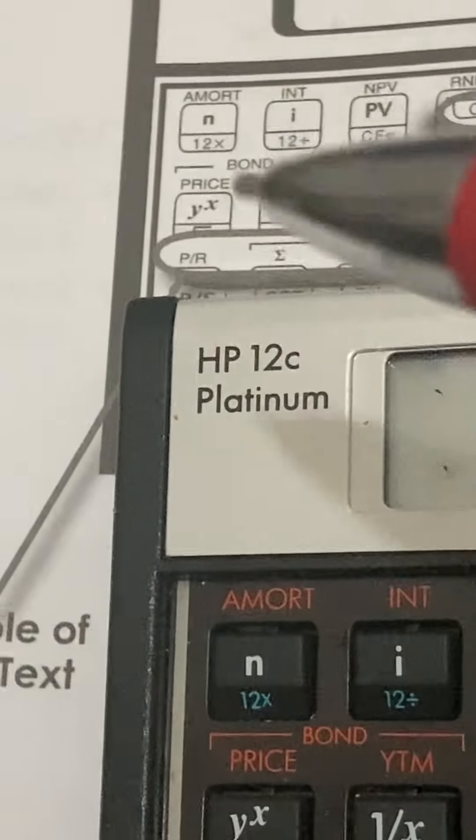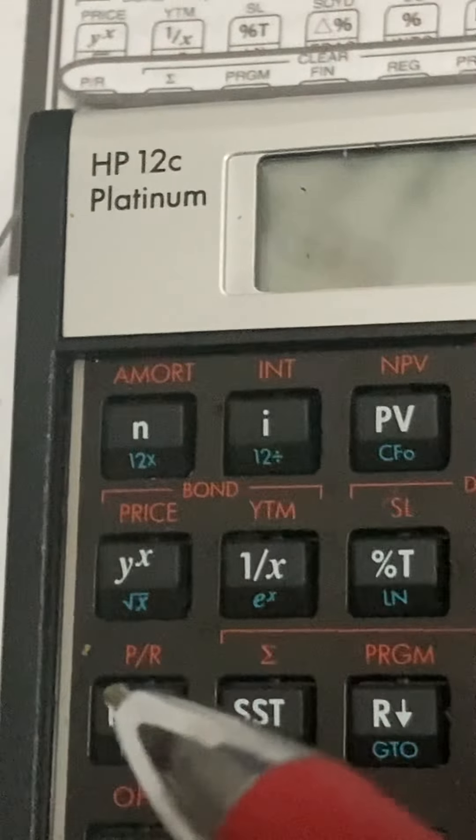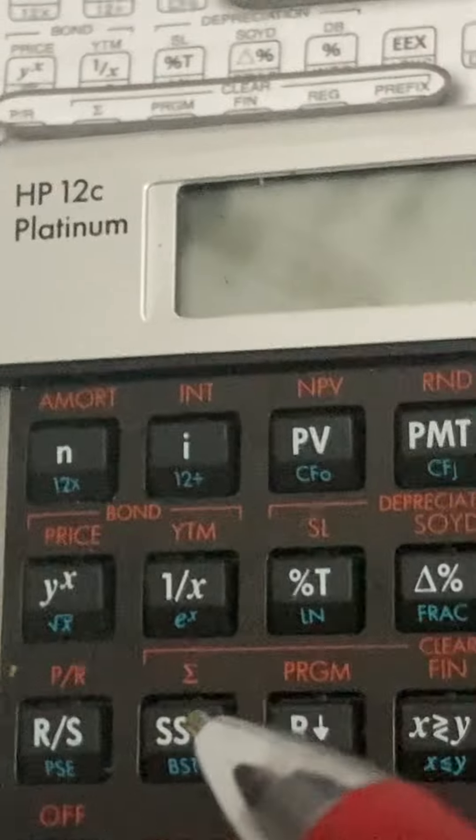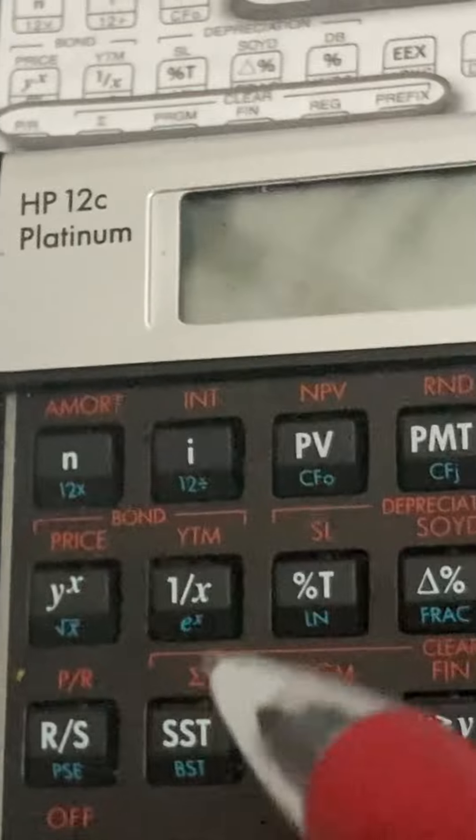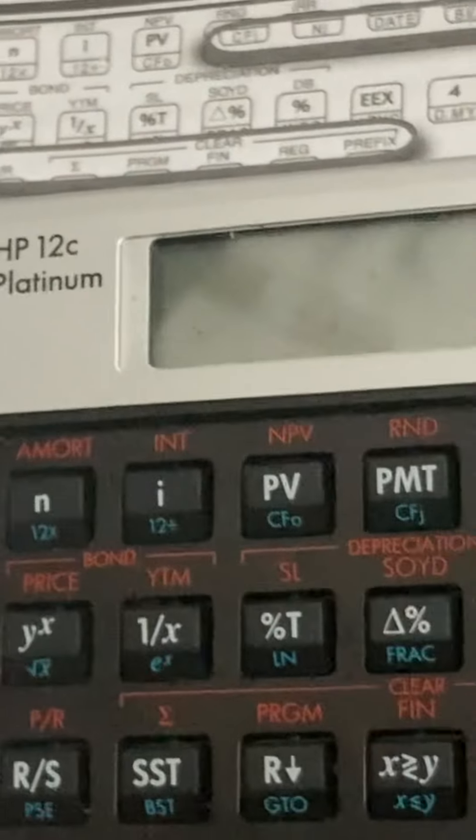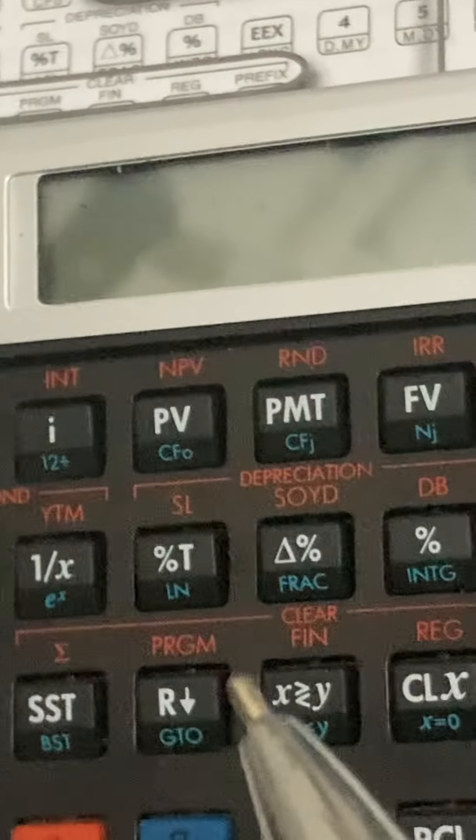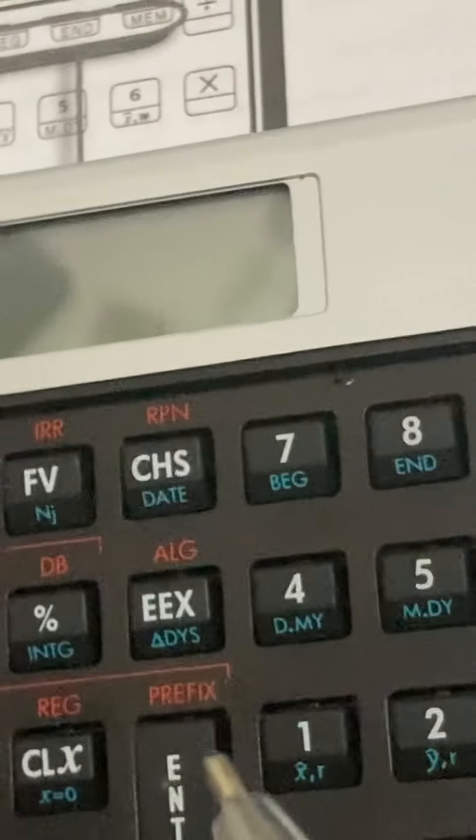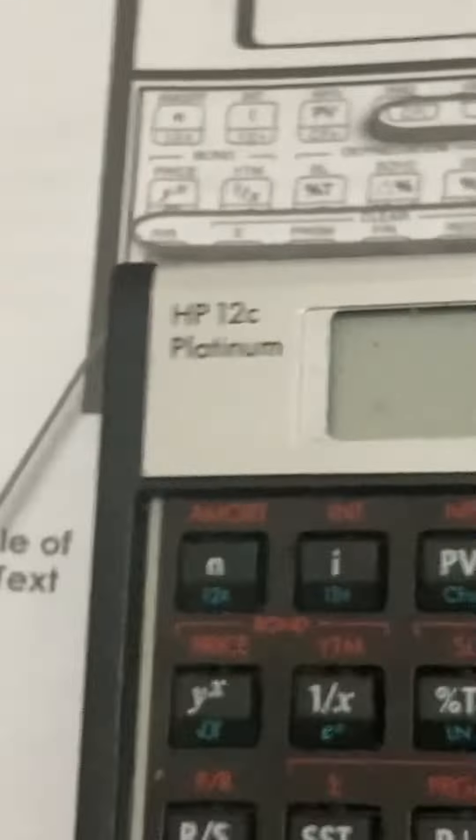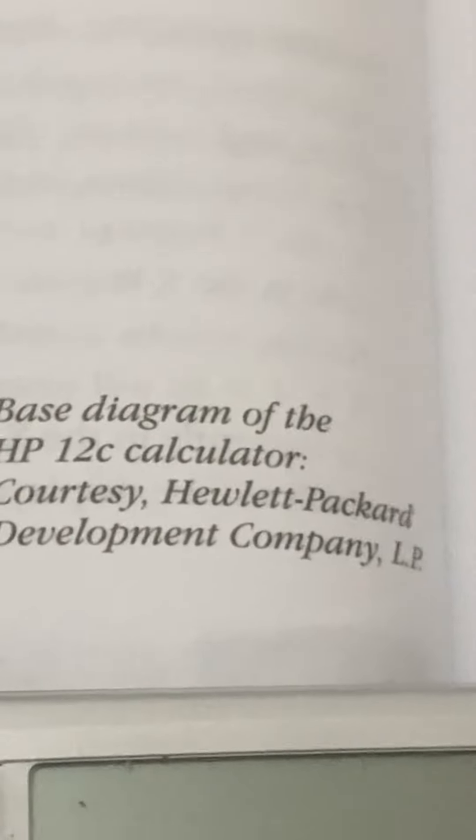Here's an image of it on your actual calculator. Capital P slash R. And then the E looking one. And then P, R, G, M in orange, F, I, N in orange, R, E, G in orange, and lastly, prefix in orange. This is your base diagram of the HP 12C calculator, courtesy of Hewlett Packard Development Company, LP, that we're studying today.